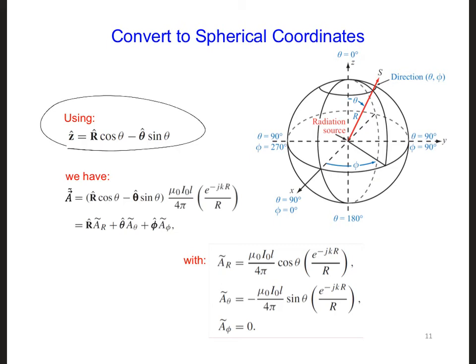So using that, we're going to plug that in at the beginning of A and then we can write out A. We can separate out the three components that we're going to get. We're going to get an r hat component, a theta hat component, and a phi hat component, although that one turns out to be zero.